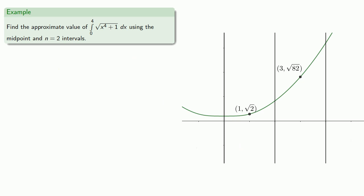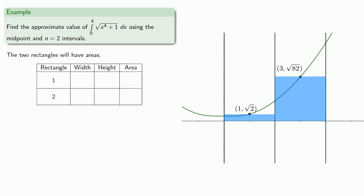Now the midpoints give us the tops of two rectangles, and so we'll find the areas of the two rectangles. And if we add these areas up, that will give us an approximation to the definite integral.